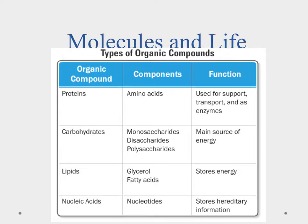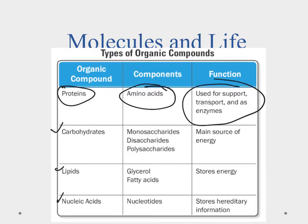Let's talk about our molecules of life. There were four types of organic molecules we talked about in the last unit. We're going to go over them quickly. They were proteins, carbohydrates, lipids, and nucleic acids. The proteins were made of amino acids — they're used for support, transport, and as enzymes.